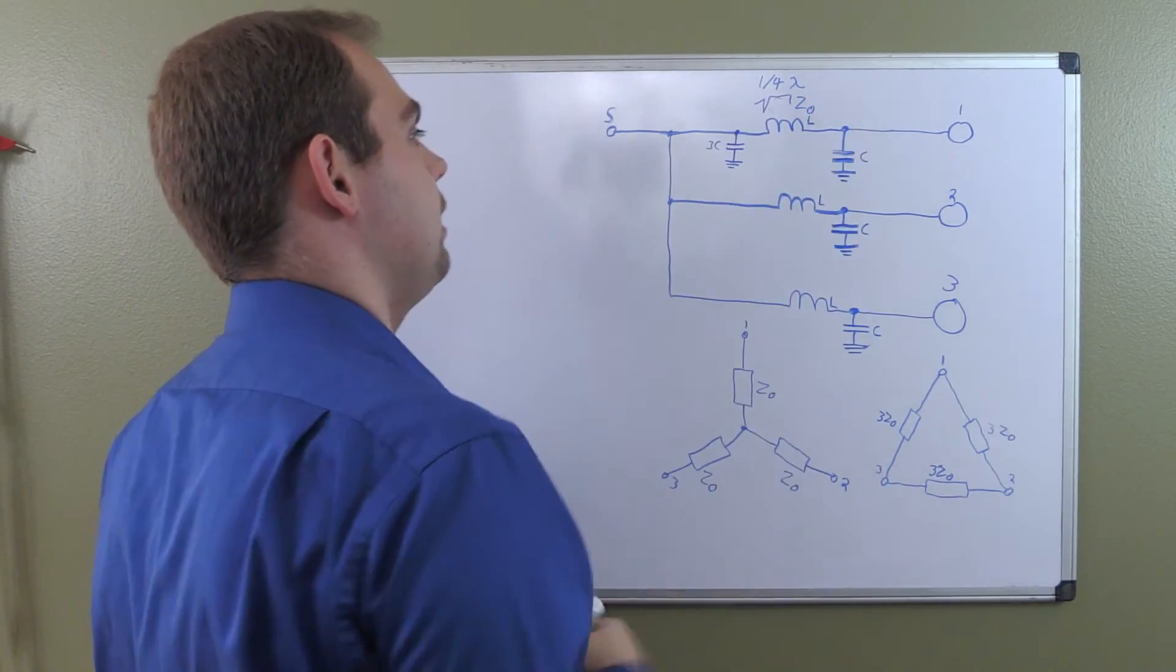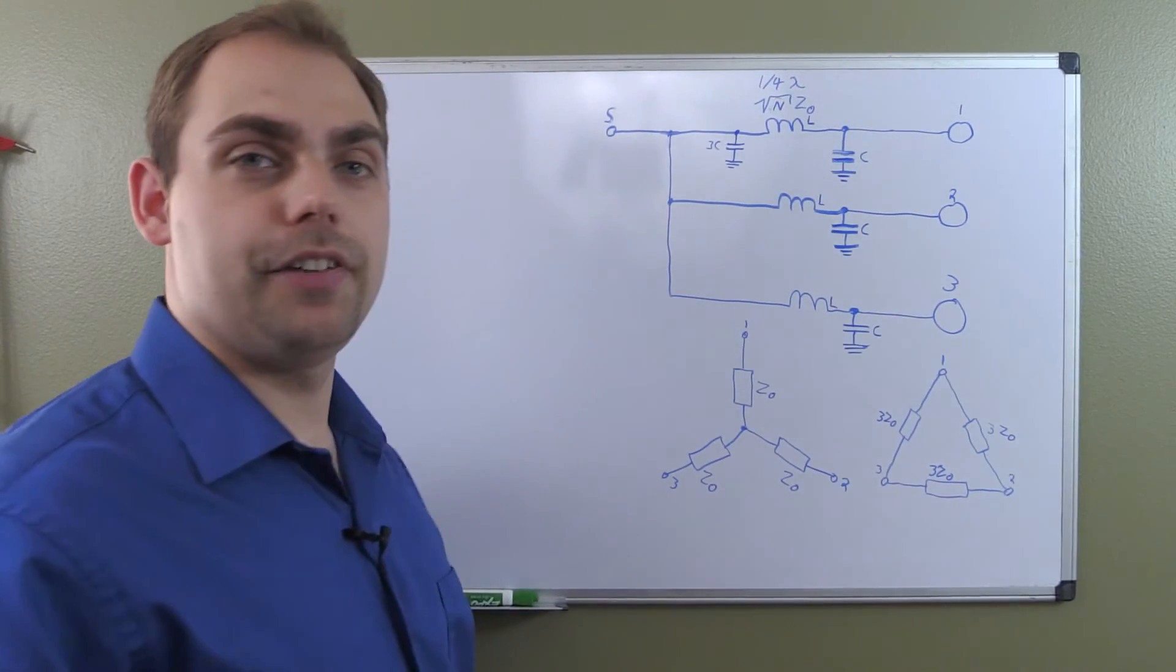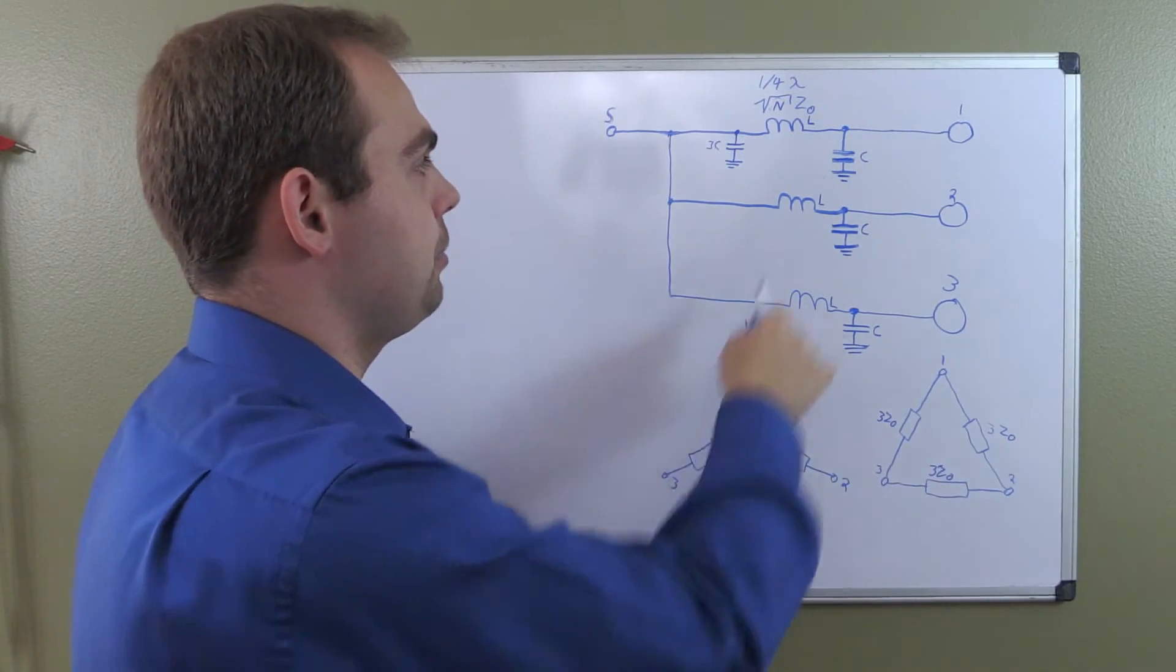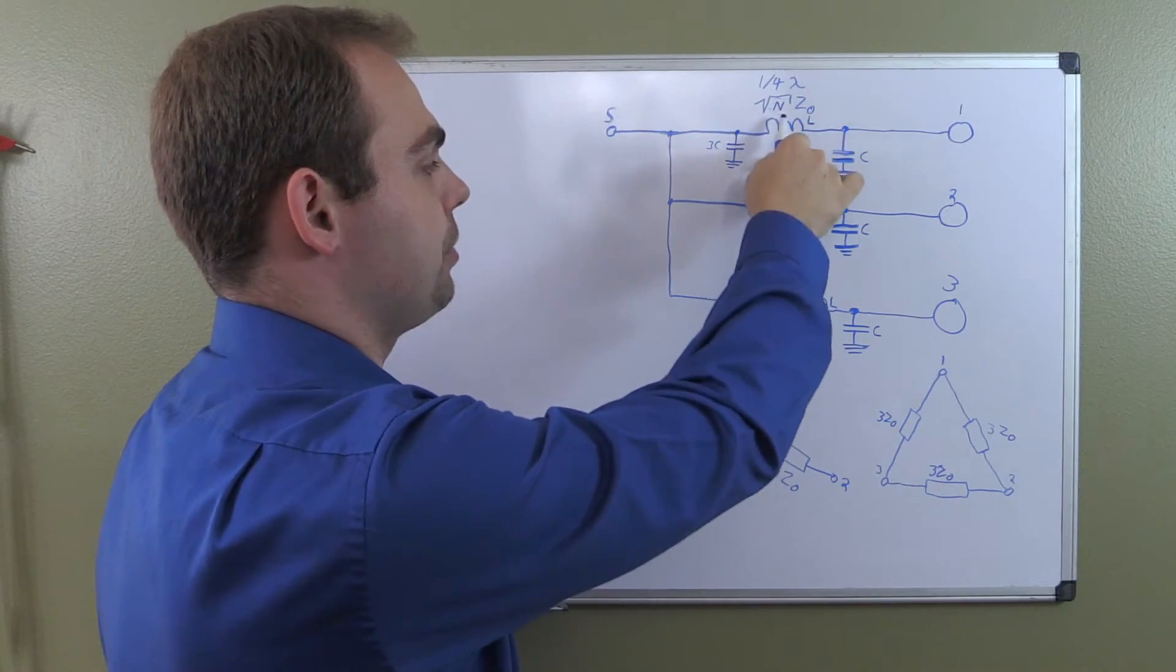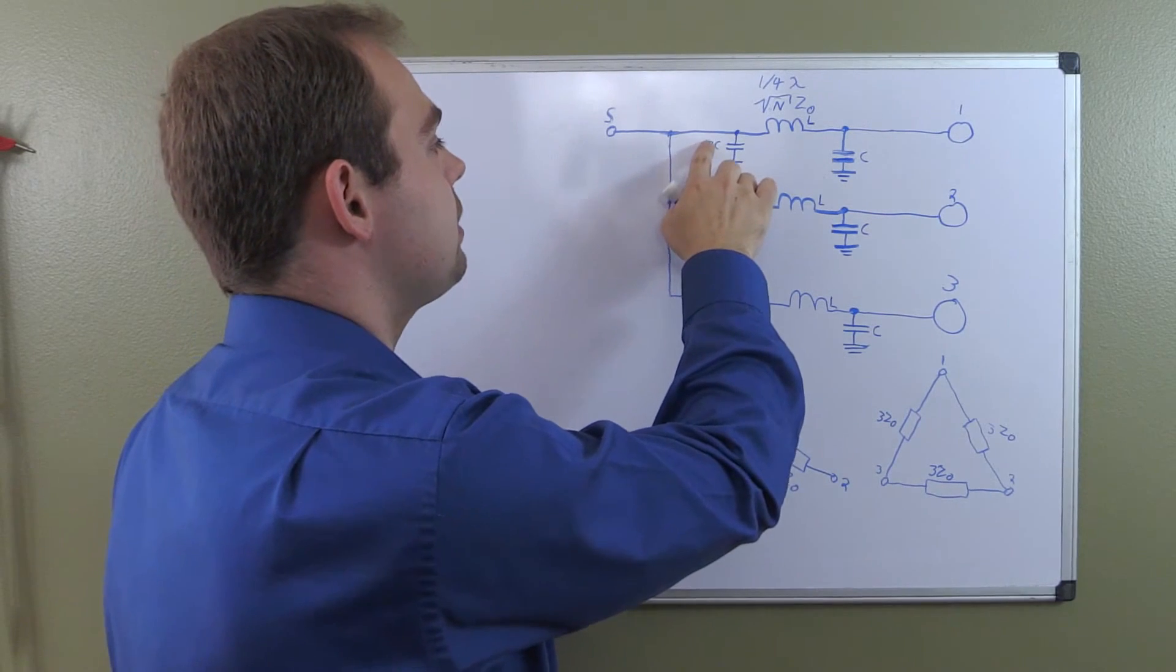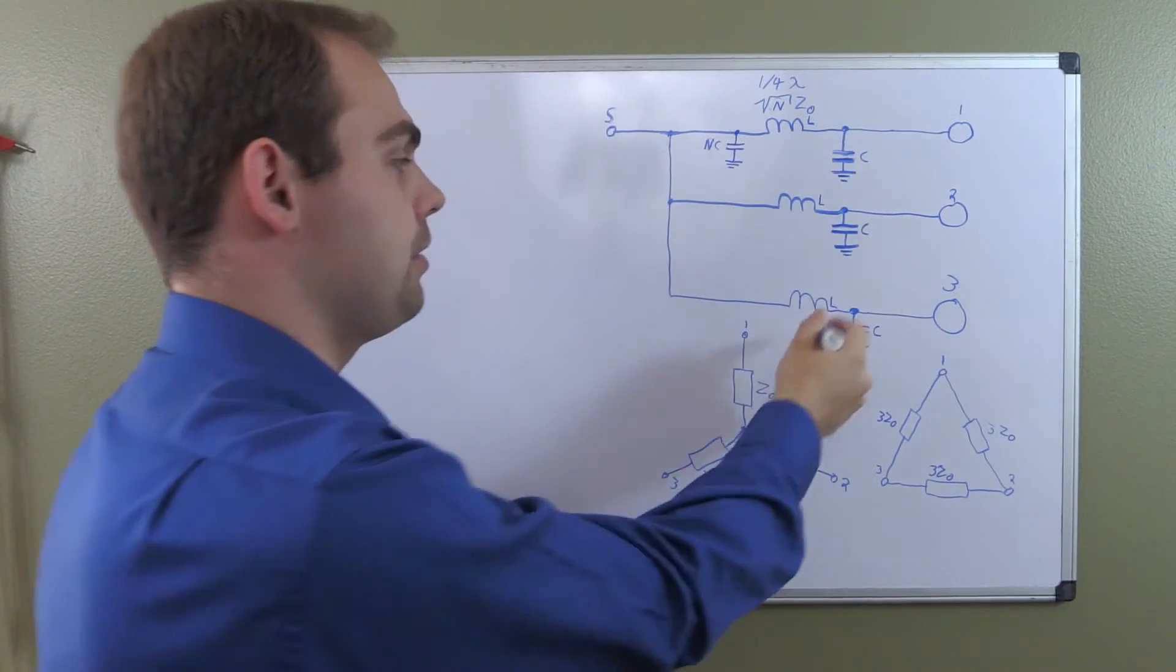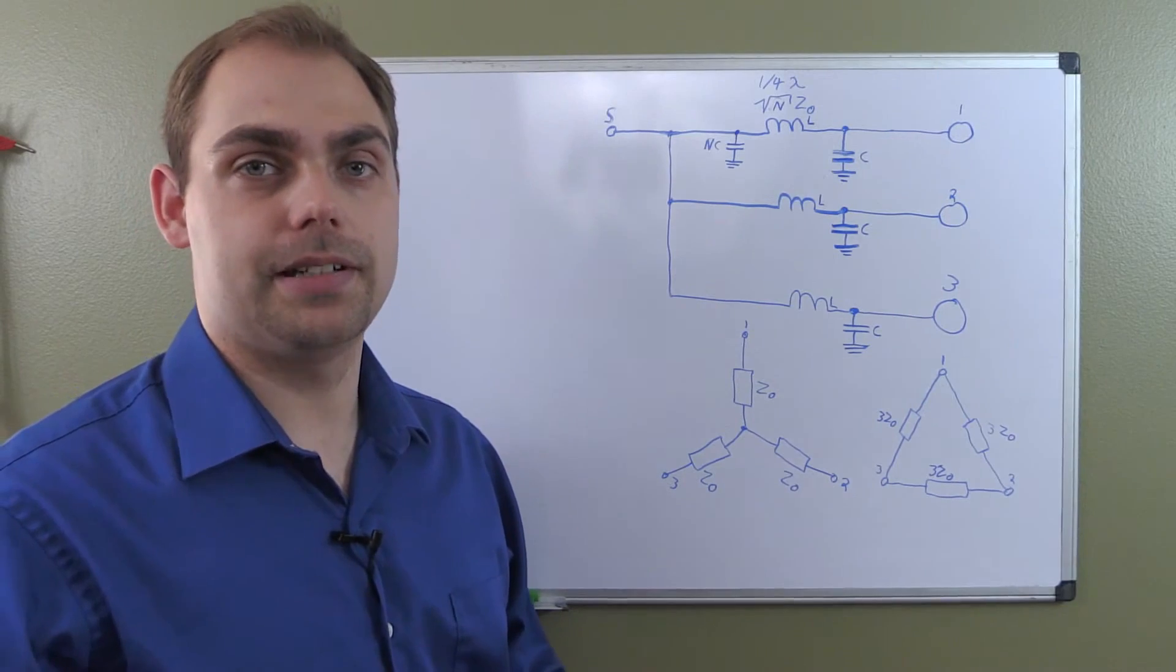So, we can simplify this and put in n, square root of n, times Z₀. So, if you wanted to tag on another pi network down here, you would simply make that impedance or reactance of this inductor the square root of 4, if you would have a fourth one on here. The same here. This number, obviously, needs to correspond to the amount of pi networks, and thus the amount of splits in our Wilkinson.